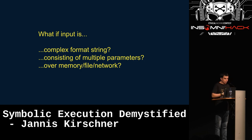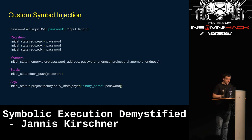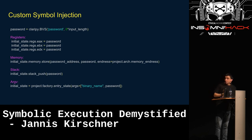Up until now we didn't have to define input because angr automatically tries to provide input for your binary. This works great with simple input, but as soon as it gets more complicated — complex format strings with multiple parameters, or input over a file or network — we'll have to do that by hand. For that, angr has a data structure called the symbolic bit vector, used for storage of symbolic variables. You instantiate it with a name — which angr uses internally to reference it — and a size, and you can put it into registers, memory, argv, onto the stack, wherever you want.